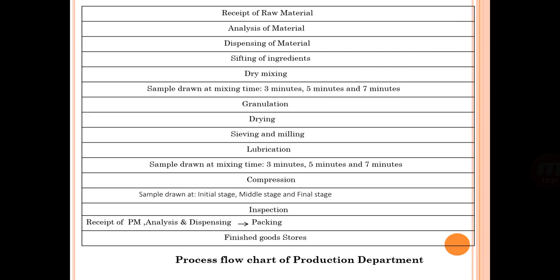The process flow chart for the production department: receipt of raw material → analysis → dispensing → sieving of ingredients → dry mixing (sampled at 3, 5, 7 minutes) → granulation → drying → sieving and milling → lubrication (sampled at 3, 5, 7 minutes) → compression (sampled at initial, middle, and final stage) → inspection → receipt of packaging material → analysis and dispensing → packaging → finishing → finished goods store.